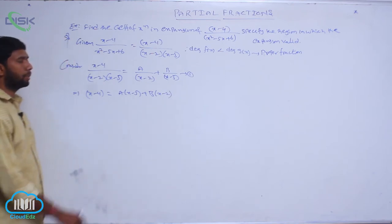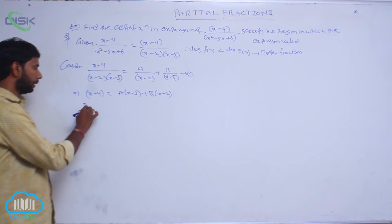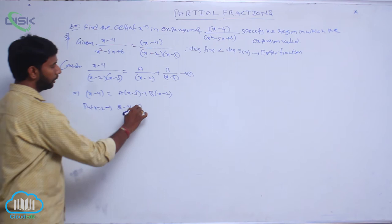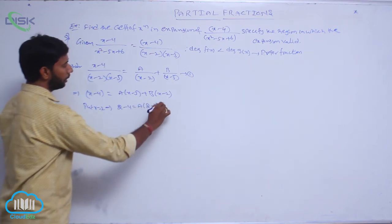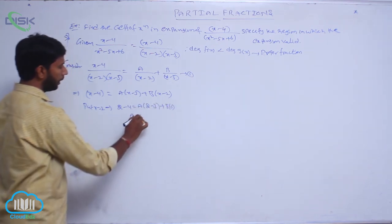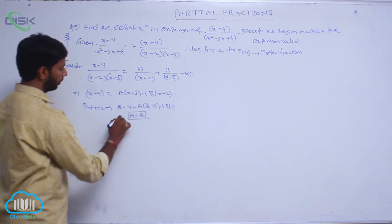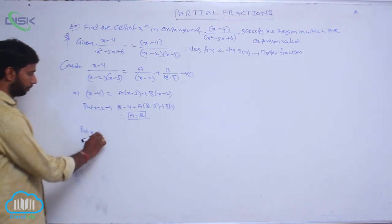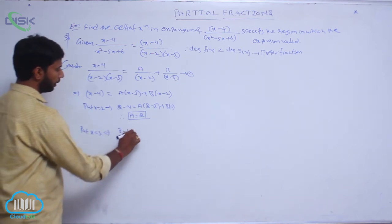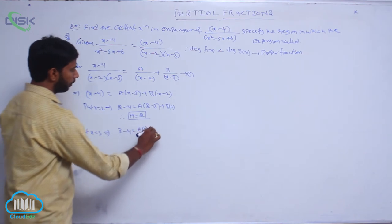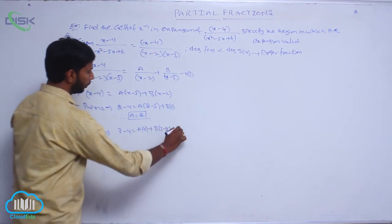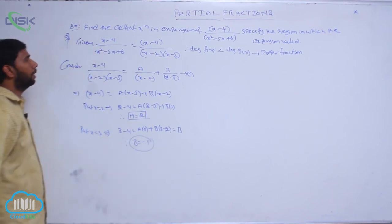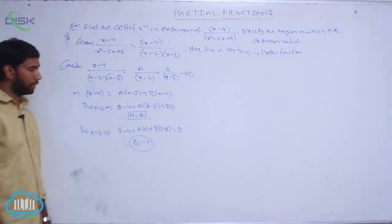Now we have to find the values of A and B. Put x equal to 2: 2 minus 4 equals A(2 minus 3) plus B(0), which implies A equals 2. Put x equal to 3: 3 minus 4 equals A(0) plus B(3 minus 2) equals B. Therefore B equals minus 1. So A equals 2 and B equals minus 1.